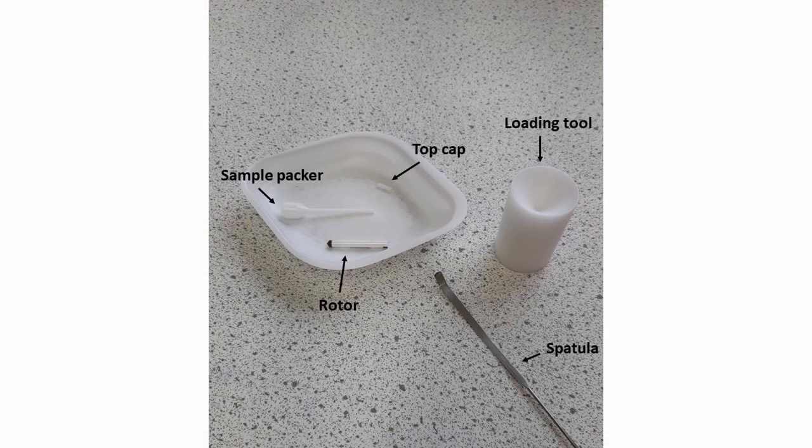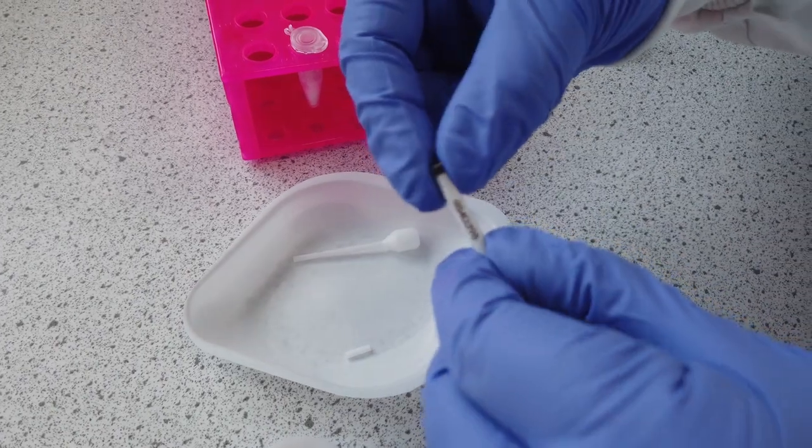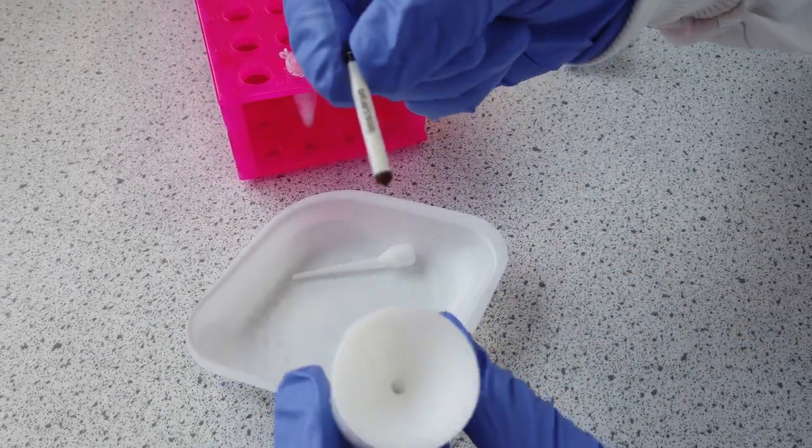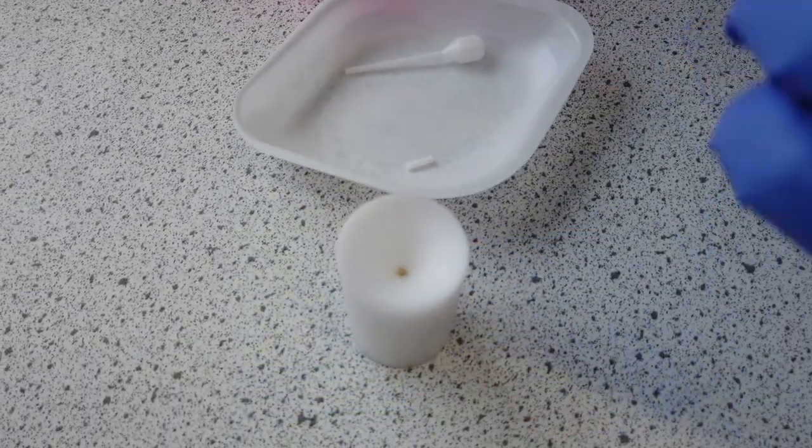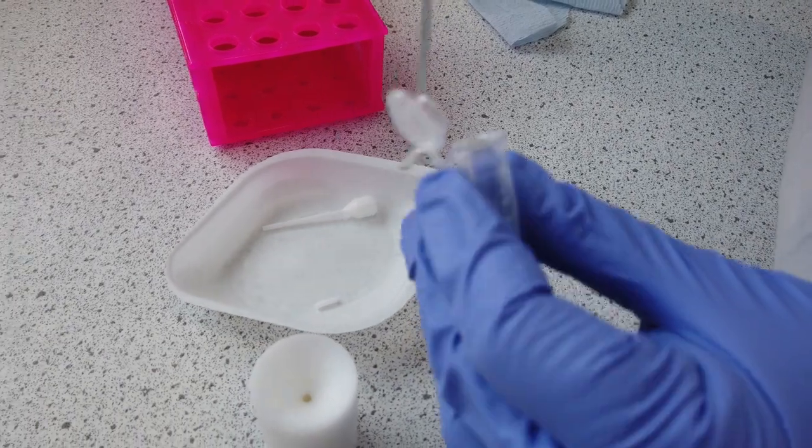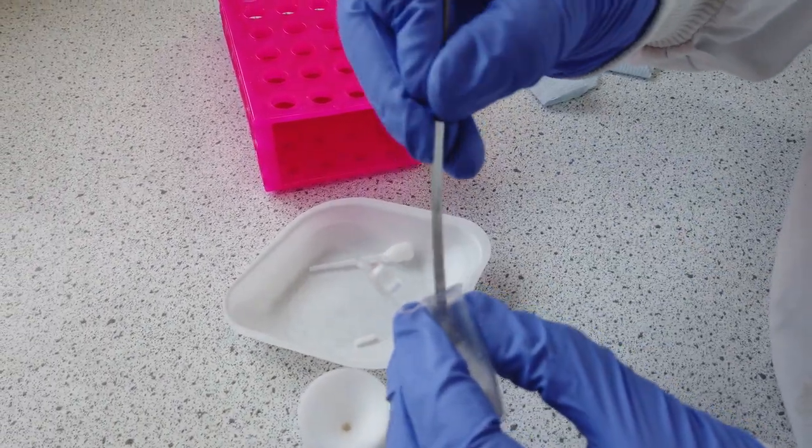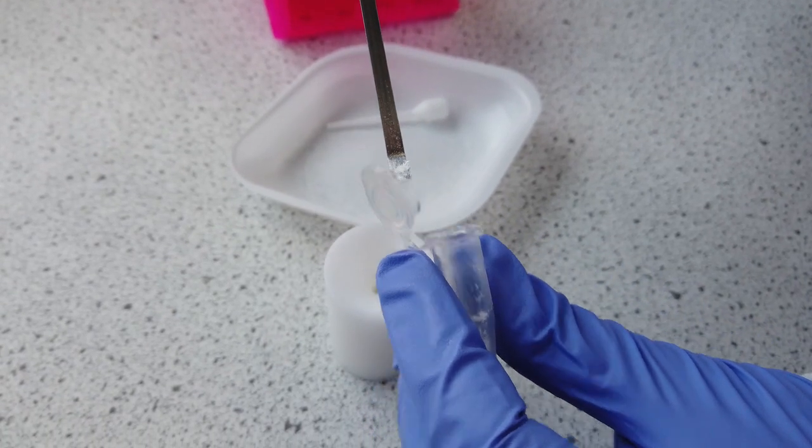To prepare for loading a solid sample, you need a loading tool, sample packer, empty rotor, a small spatula, and of course your sample. Place the empty rotor into the loading tool tip down. Add a small amount of sample and use the sample packer to push the sample all the way down to the bottom of the rotor, making sure it is tightly packed.